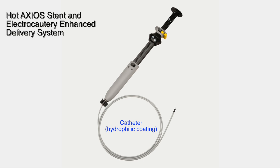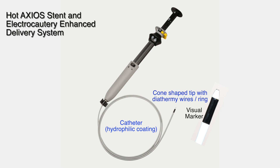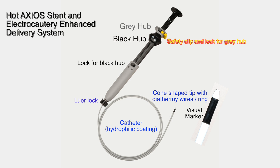A word or two about the hot Axios stent and electrocautery enhanced delivery system. The device comprises a handle and a catheter which has a hydrophilic coating. The tip of the catheter is cone shaped and has two diathermy wires running longitudinally along the slope of the cone and attaching to a tiny metal ring at the very tip. There is a short black portion of catheter proximal to the nose cone which acts as a visual marker. The catheter is wetted and passed down the channel of the echo endoscope. A lever lock is used to connect the device securely to the scope. After the device has been lever locked into place the handle can still be rotated. The handle has a black hub and a grey hub situated midway up the handle. There is a lock switch for the black hub and a yellow safety clip and a lock switch for the grey hub.